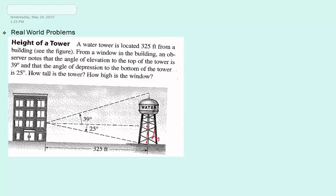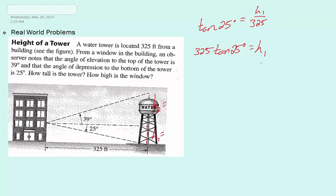We're going to try to solve for h1, which will give us the height of the window. Then we can solve for h2, which will give us the height from the window to the top of the tower. In h1, we see our angle is 25 degrees, and our base of the triangle is 325 feet. So we can take tangent, knowing that tangent is opposite over adjacent, and that our angle is 25 degrees. We have h1, which is opposite of the angle, and adjacent, which is our base, which is 325 feet. We can solve for h1 by multiplying each side by 325, and we'll get 325 times tangent times 25 degrees will equal h1. If we multiply this out, we'll see that h1 is approximately 151.5 feet.